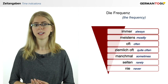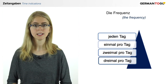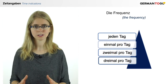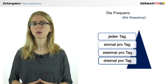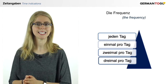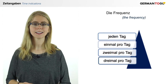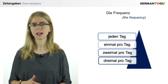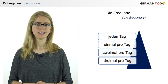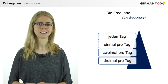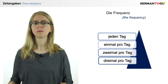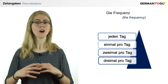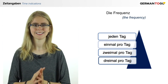Never. And if you want to say every day — that's the accusative case again. Jeden Tag. When you give a time indication without a preposition, it will always be accusative, so that's why we have jeden Tag — every day. Einmal pro Tag — once a day. Zweimal pro Tag, dreimal pro Tag, viermal pro Tag, fünfmal pro Tag, sechsmal pro Tag, hundertmal pro Tag, tausendmal pro Tag — as much as you want.